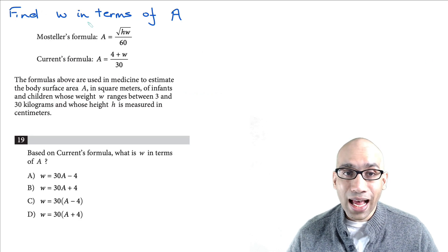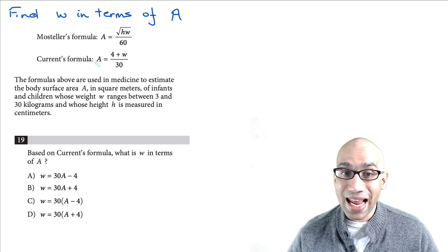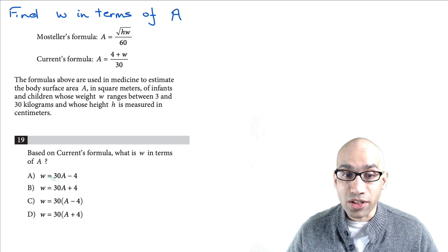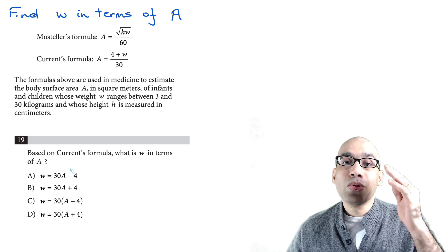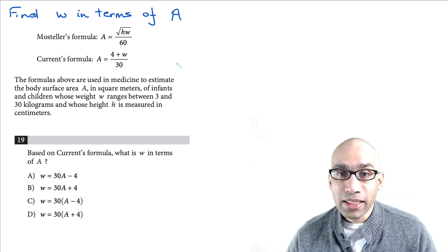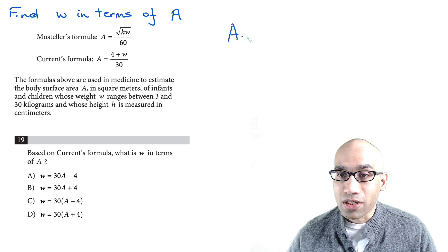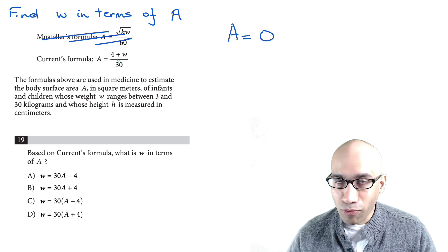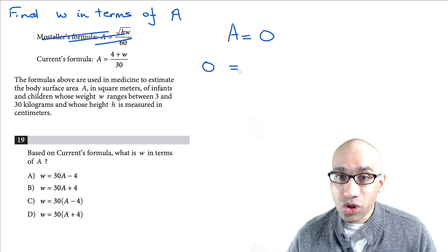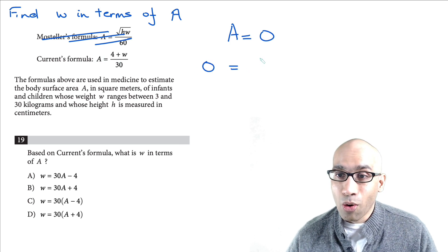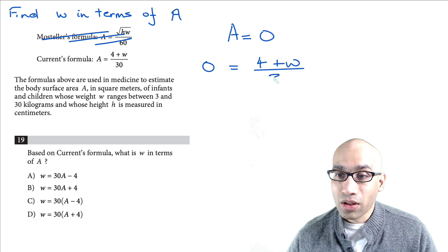In this next hack, you're asked to find w in terms of a. You're given that a equals something and asked what w equals. Use the same idea — substitute a equal to 0. When you put a equal to 0, you get 0 equal to (4 + w) over 30.